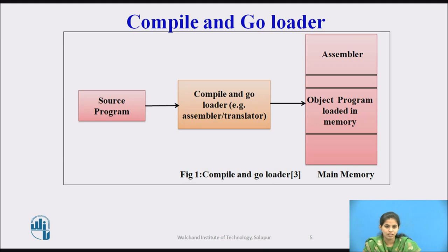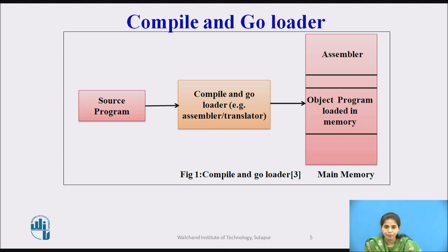This is the figure of the compile and go loader. Here, first is the source program, second is the compile and go loader — which is an assembler or translator — and third is the main memory. In main memory, one part is allocated for the assembler and in the second part the object program is loaded. The source program is given as input to the compile and go loader, which translates the source program into the object program, and it is loaded into the main memory for execution.